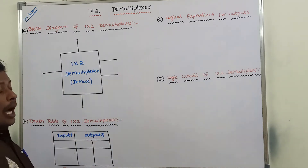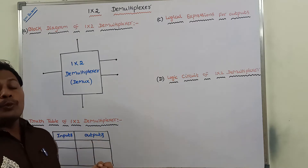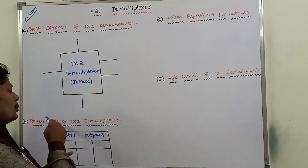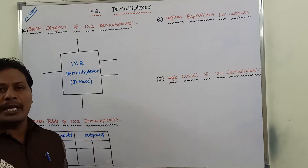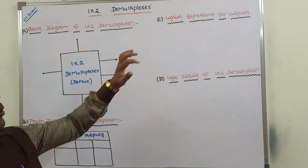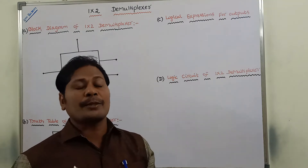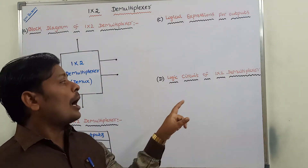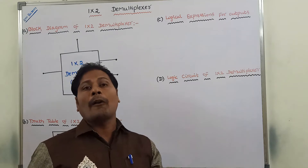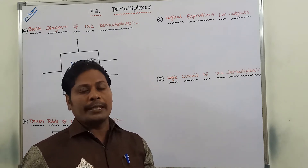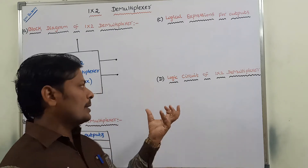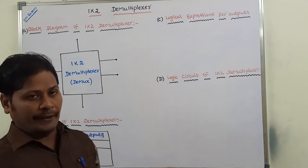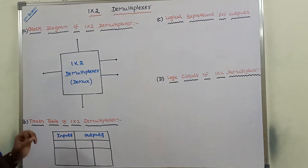Now, the four points we will cover in this video are: how a 1 by 2 demultiplexer works, what is the truth table of a 1 by 2 demultiplexer, how logical expressions are derived from the truth table, and how we design the logic circuit of the demultiplexer.